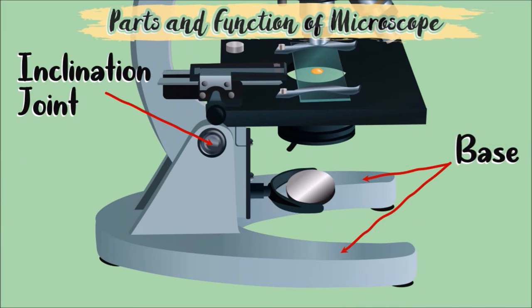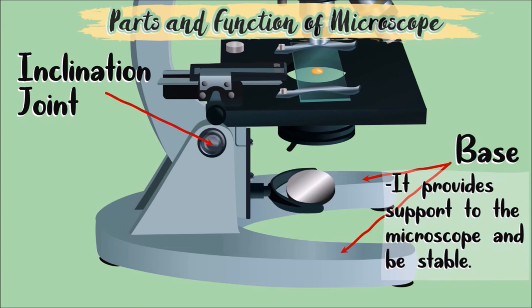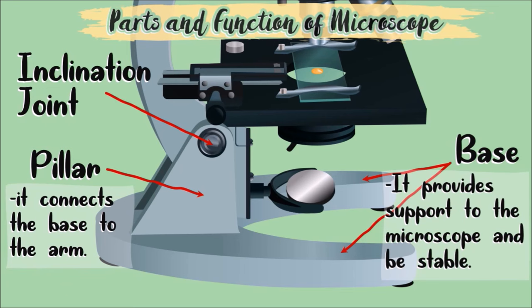This part of the microscope is called base. It provides support for the microscope to be stable. This part is the pillar. It connects the base to the arm.